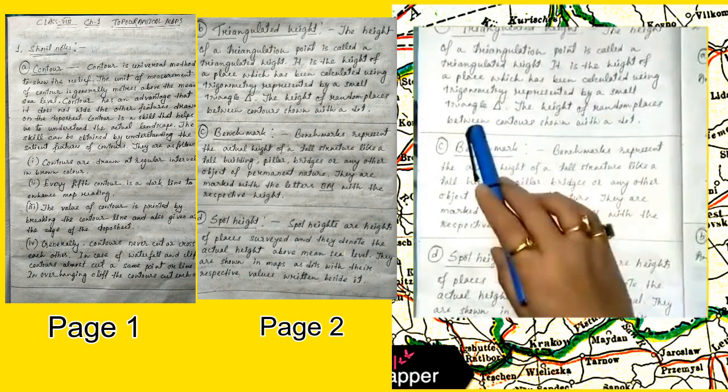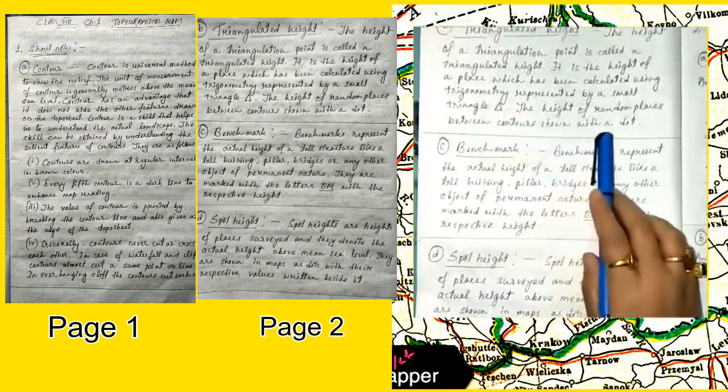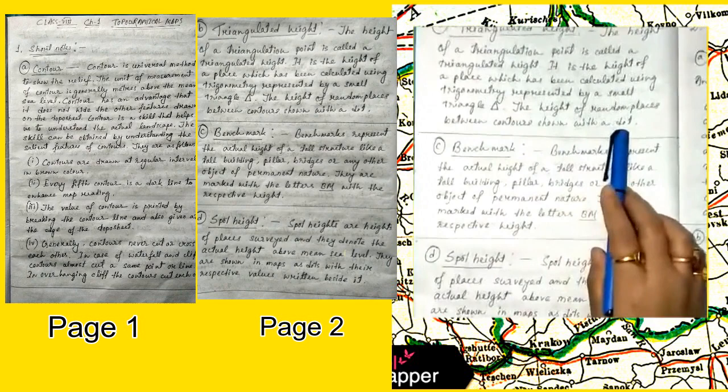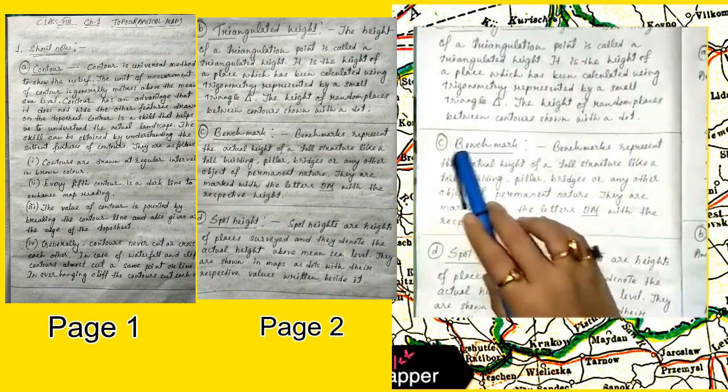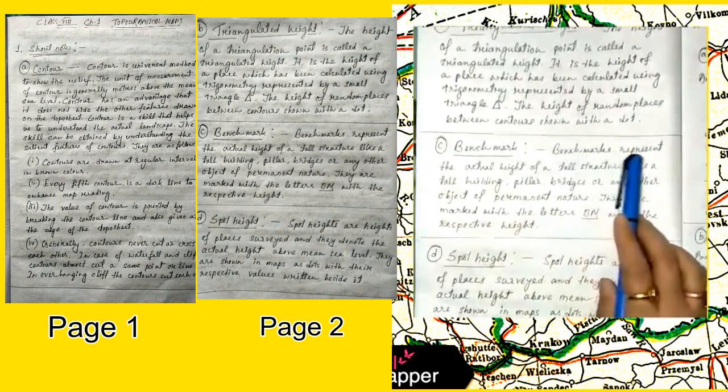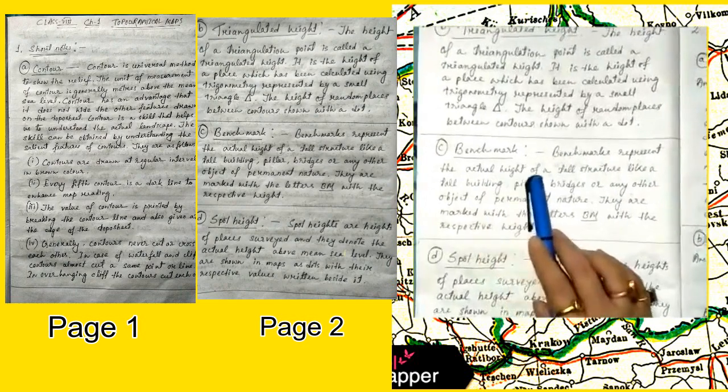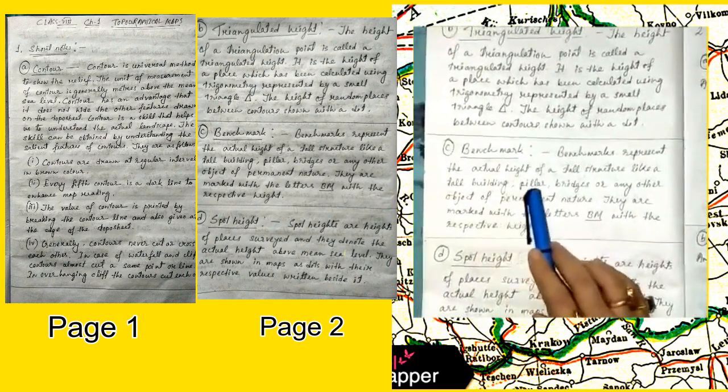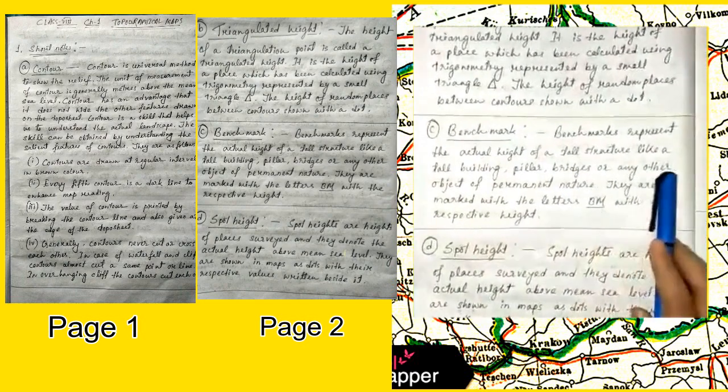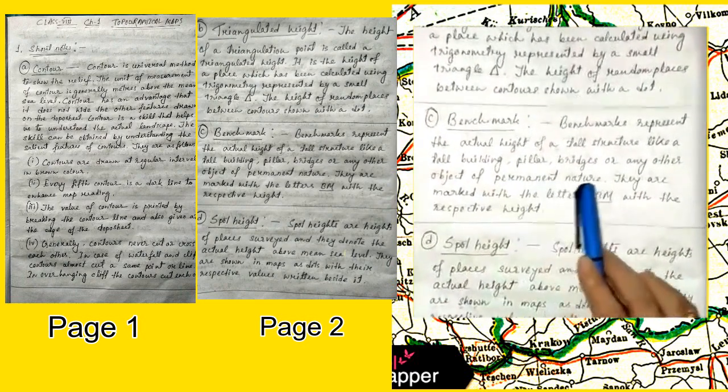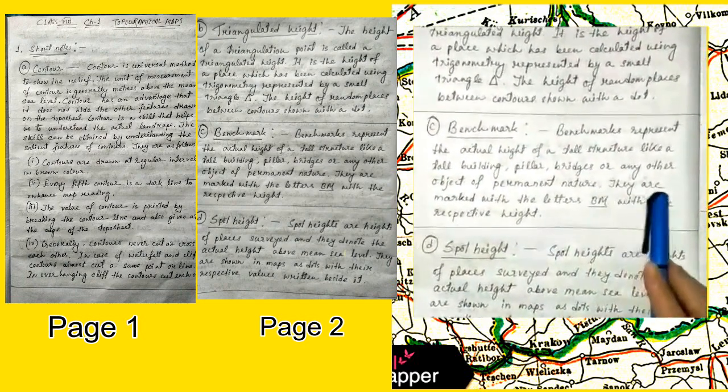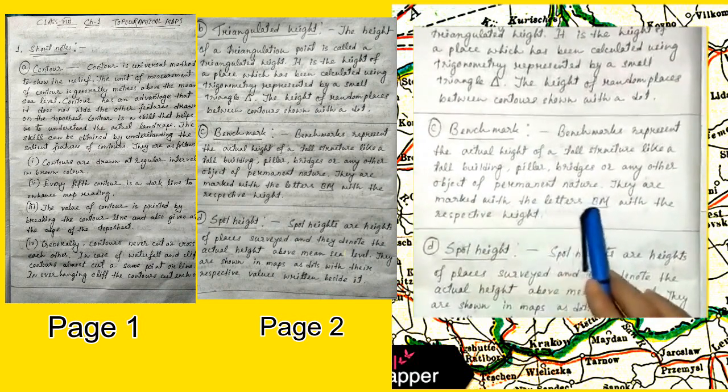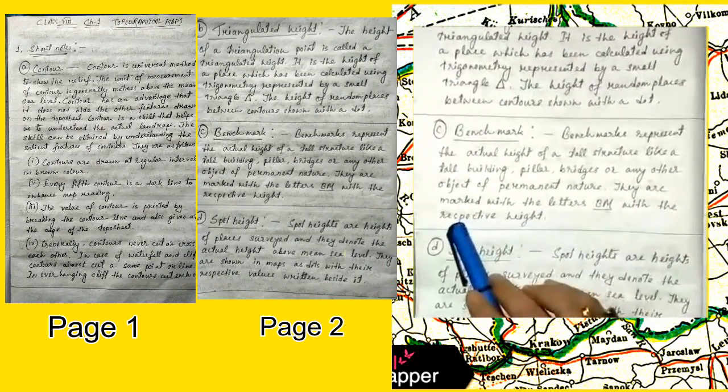Number C: Benchmark. Benchmarks represent the actual height of a tall structure like a tall building, pillar, bridges, or any other object of permanent nature. They are marked with the letters BM with the respective height.